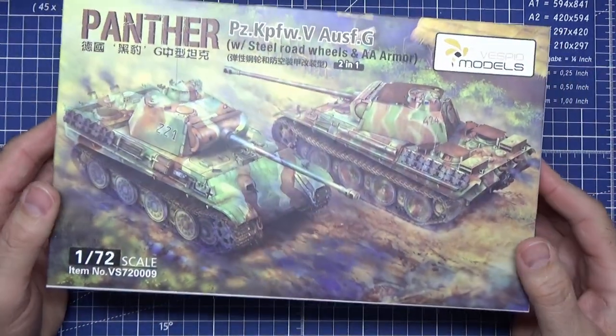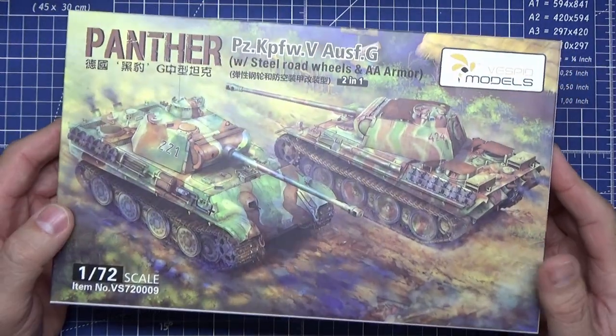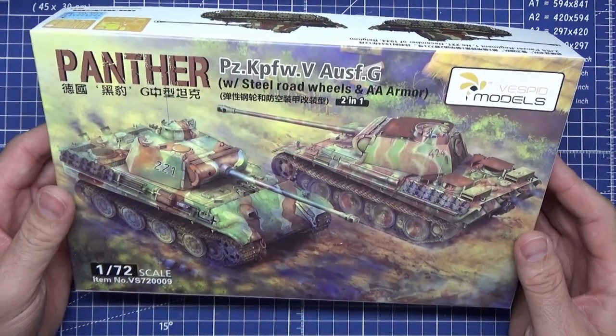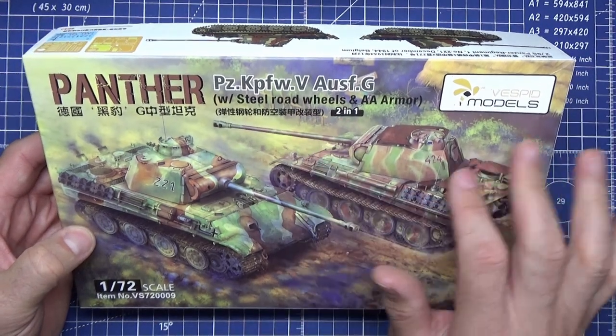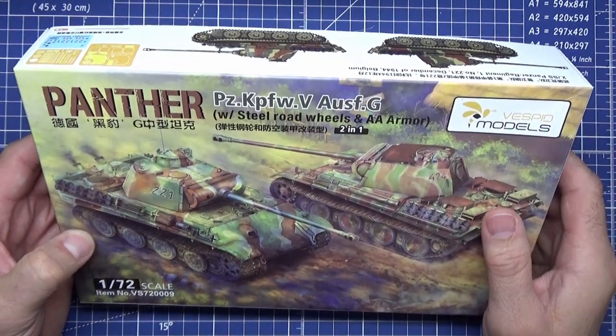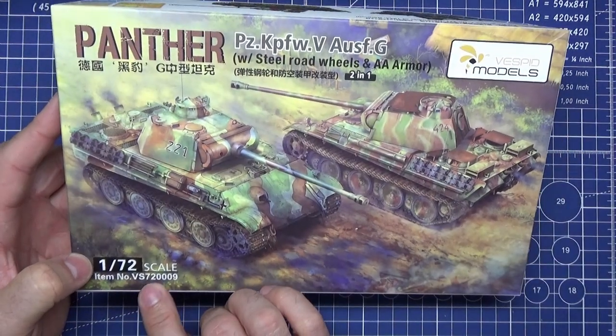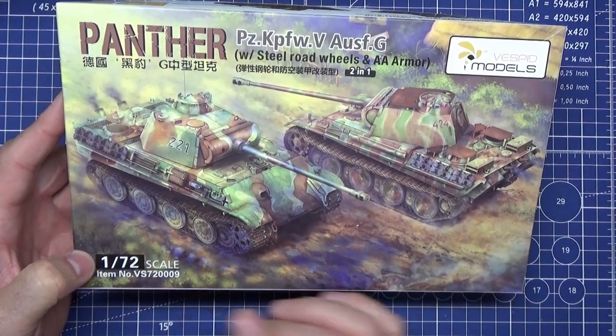This is the Panther Panzerkampfwagen Ausf G with steel road wheels and AA armor, a two-in-one kit from Vespid Models in 1:72 scale. The item number is VS 72009.